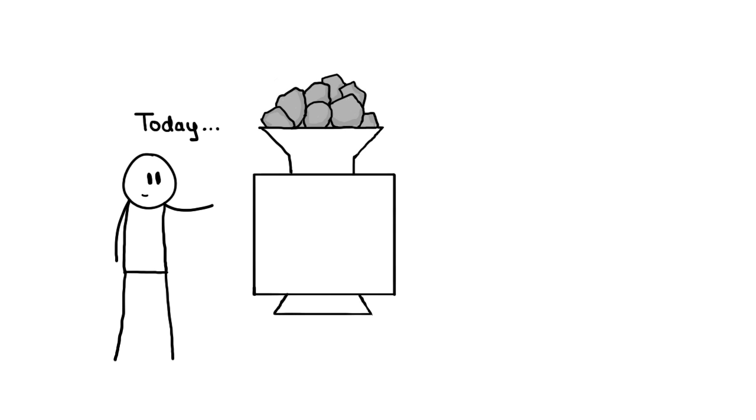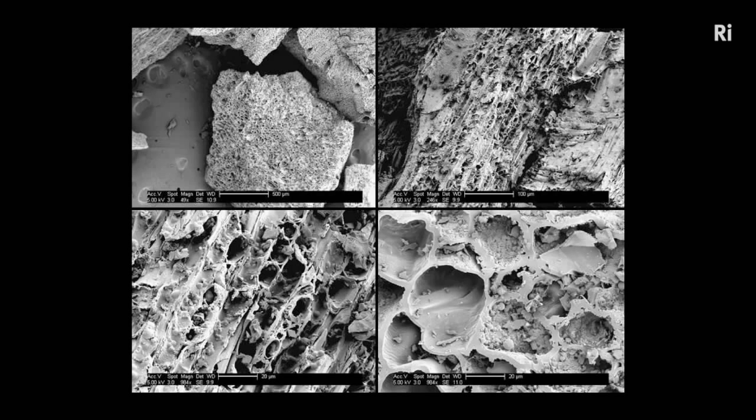Today, gunpowder is made using machines, which grind the particles really well. And there's something special about charcoal. This picture, taken using an electron microscope, shows a sponge-like structure of charcoal. So when the machine grinds these particles, it actually forces potassium nitrate and sulfur into these cavities. And that's one of the reasons why this gunpowder will burn faster than the handmade one.